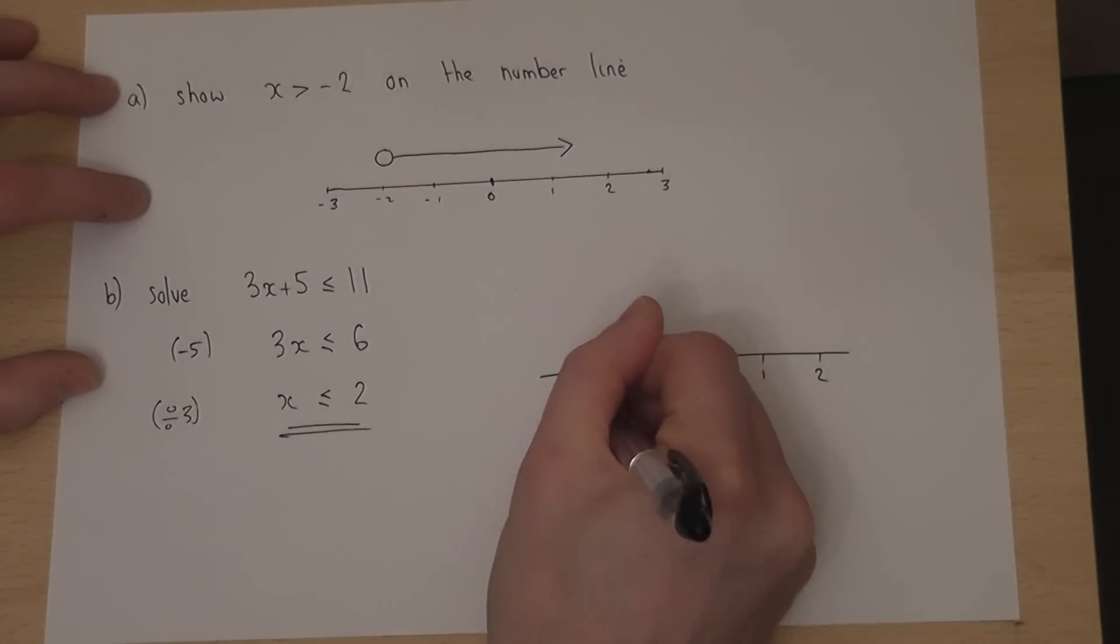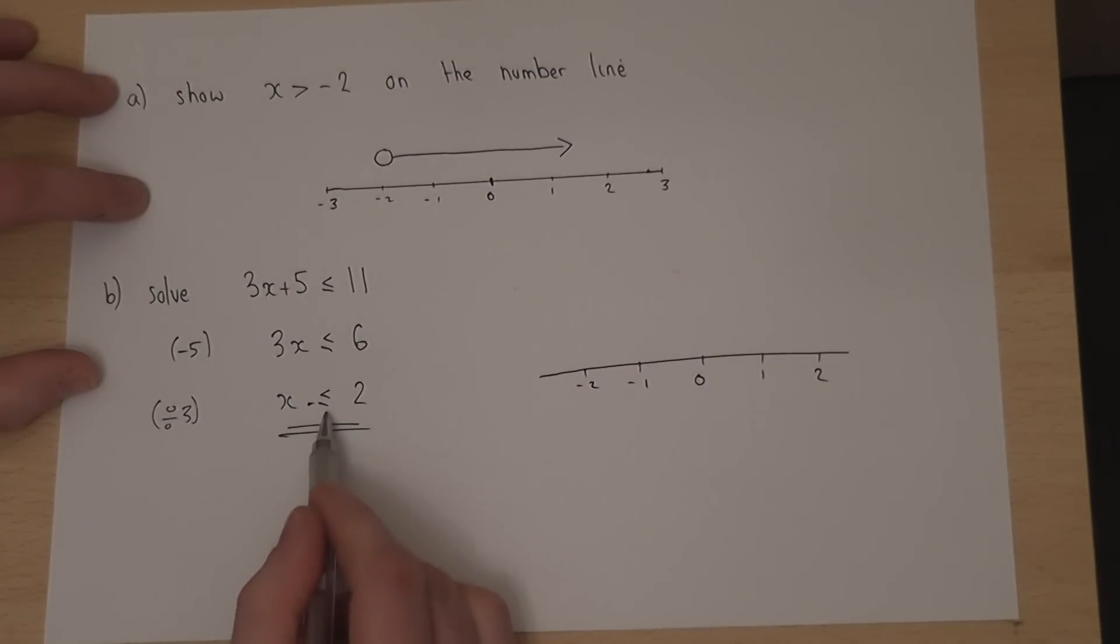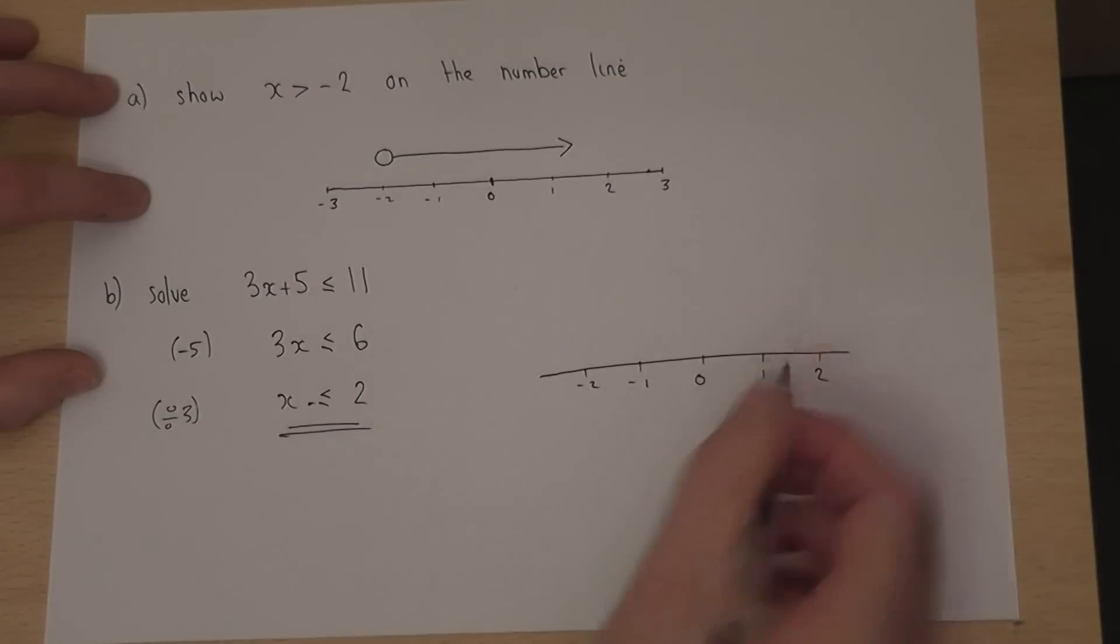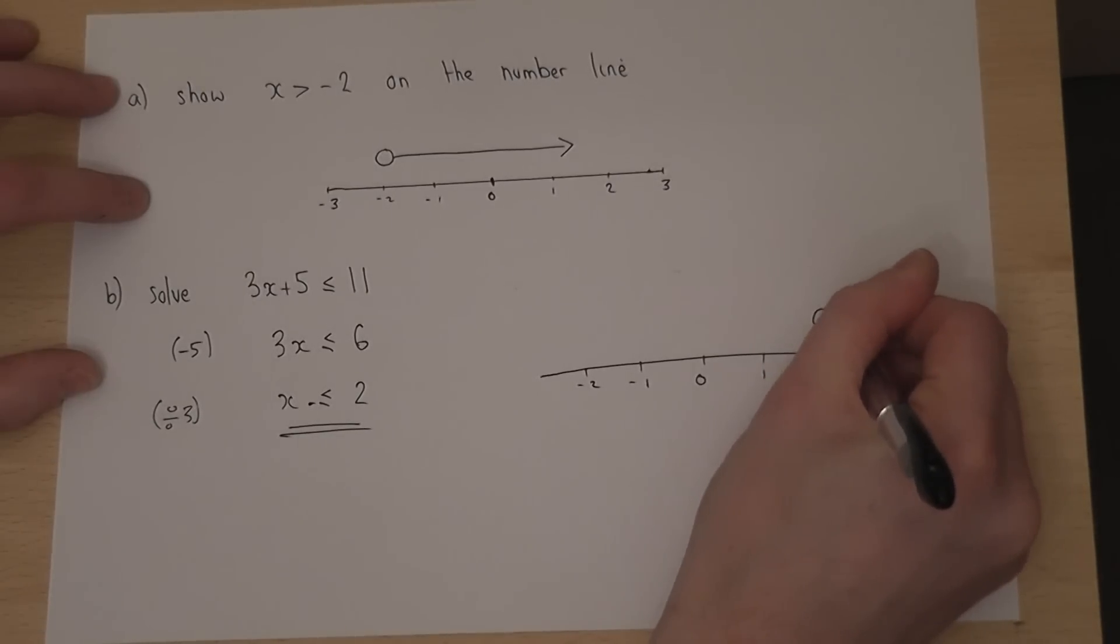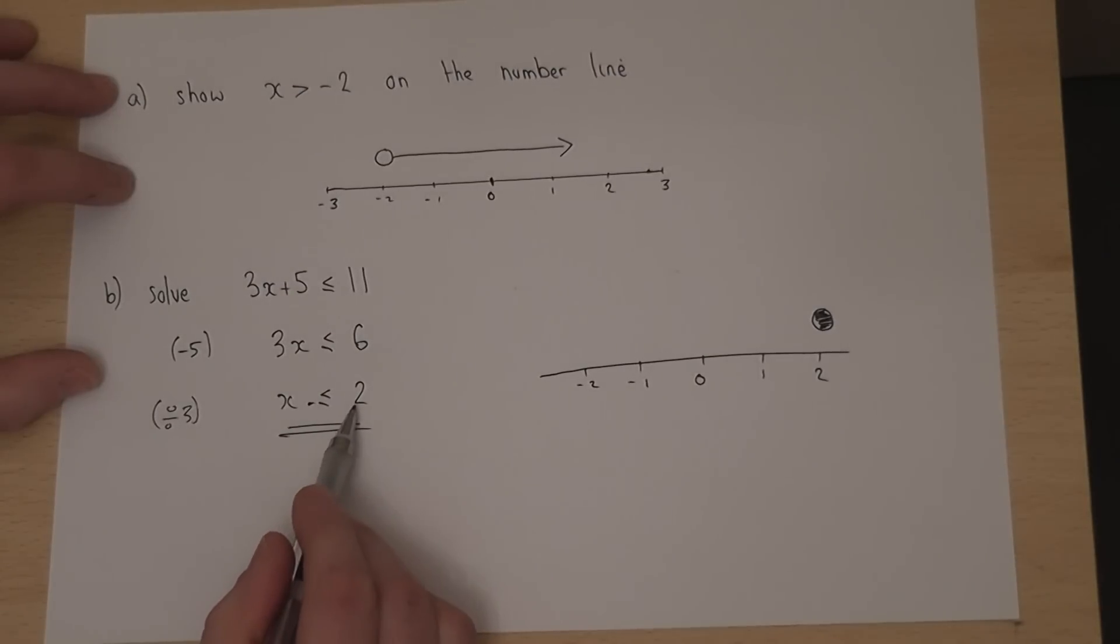Now, in this case, x must be anything less than or equal to 2. So, this time I draw a circle and I shade the circle in to show that I can now include the value 2.